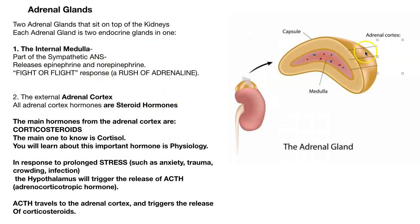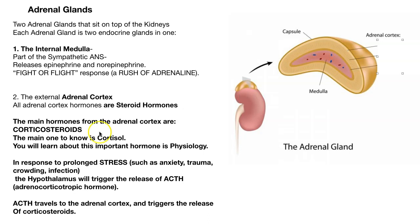The harder one to understand is the adrenal cortex. All the cortex hormones are steroid hormones. The main hormones from the adrenal cortex that we're concerned with are the corticosteroids — cortico because they come from the cortex, and they're steroids. The main steroid we'll concentrate on is cortisol, which is really important in managing long-term stress. It is the hypothalamus that triggers the release of ACTH from the anterior pituitary gland, and ACTH targets the adrenal cortex.